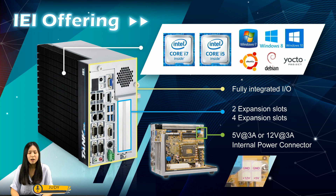Now, entering the main topic, IEI is offering an AI inference system — the Tank 870 AI — as a gateway to unlock your value of industrial AIoT. Looking inside the system, Tank 870 AI is using the 6th-gen Intel Core Processor platform, offering two SKUs, i5 and i7, upon your preferred selection.